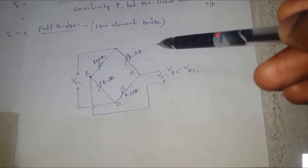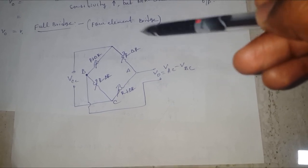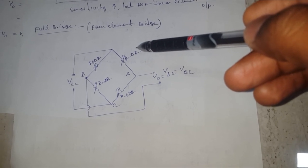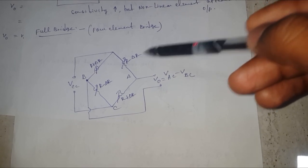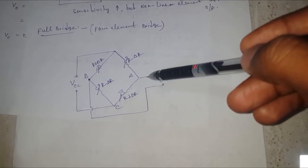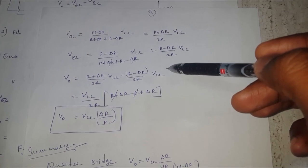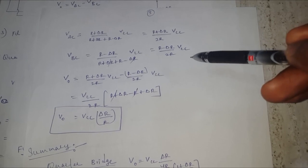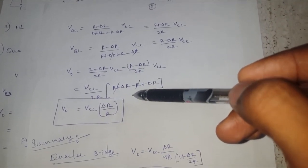The full bridge, as the name implies, has four sensing elements placed in all four arms of the Wheatstone bridge. Sensing elements placed in the same arms have equal but opposite changes in resistance — one changes to R − ΔR and the other to R + ΔR. Deriving the output voltage equation gives a final result of V_out = VCC × ΔR / R.